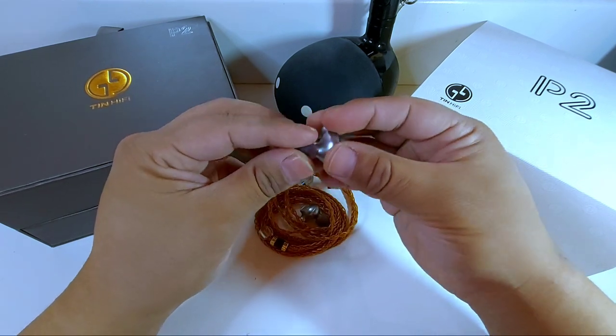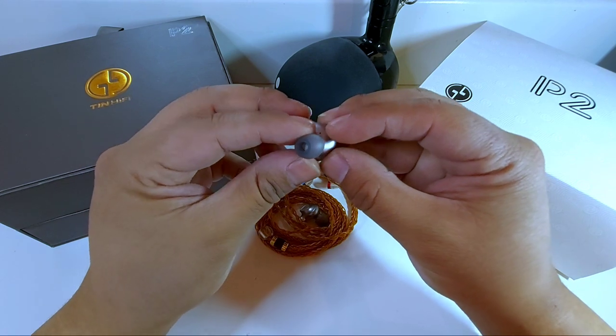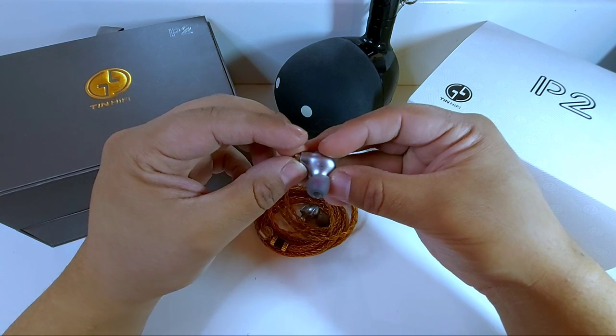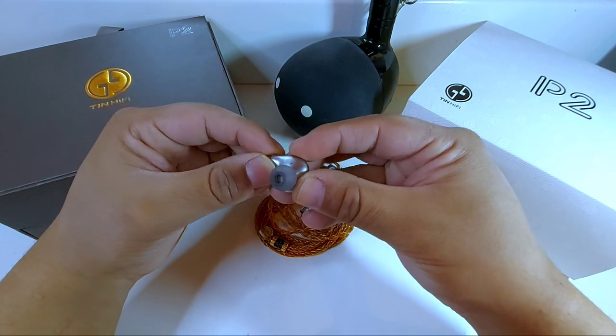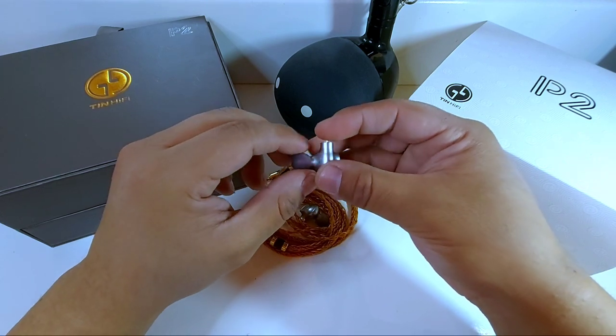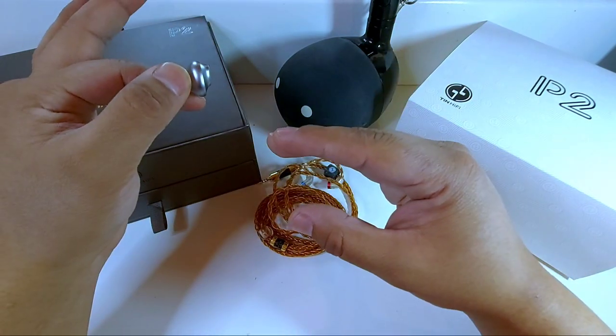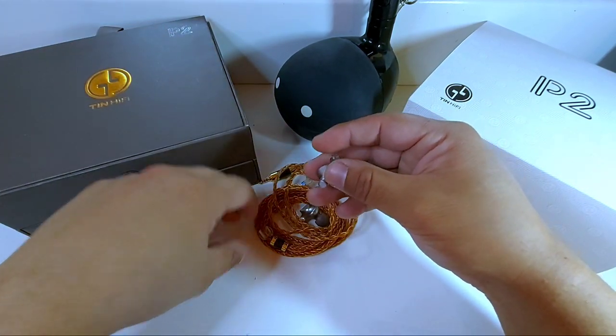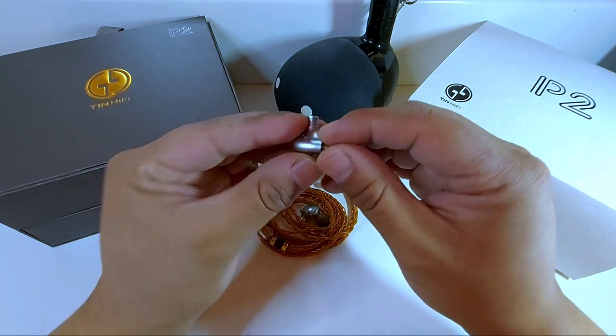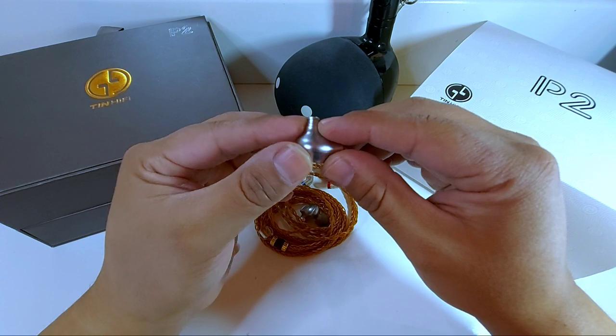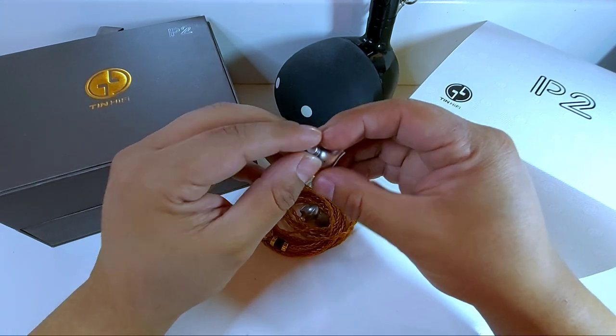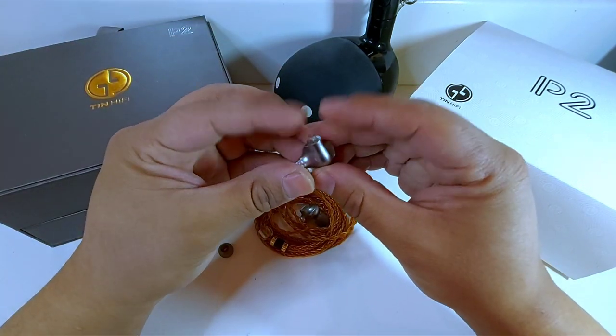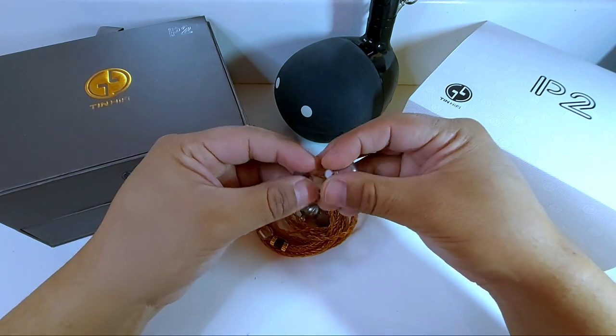En su cara interna vamos a notar una pequeña ventosa que ayuda a liberar la presión del aire y una letra que identifica el lado del auricular. Si quitamos la punta de la boquilla, distinguimos que es de extensión estándar y está protegida con un filtro circular. Su conexión es de dos pines y ajusta bastante bien.